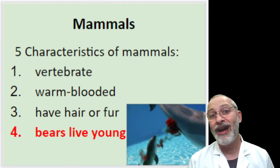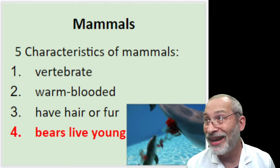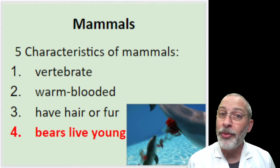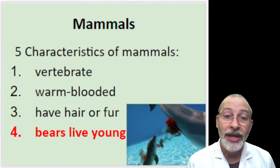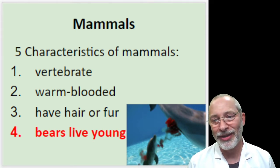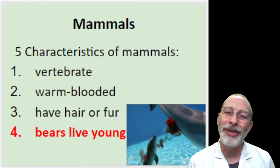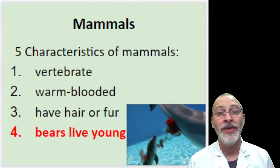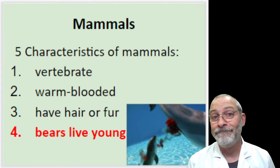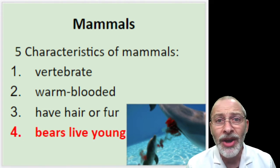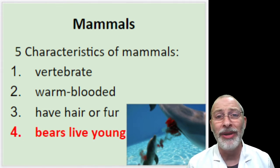Number four: mammals bear live young. This is a characteristic that might be an exception to the rule, as we'll see when we talk about the different groups of mammals. Check out this picture — a cute little baby dolphin being born in the water. As you can see there is a fair amount of blood, because birth does tend to be a process whereby blood is released.